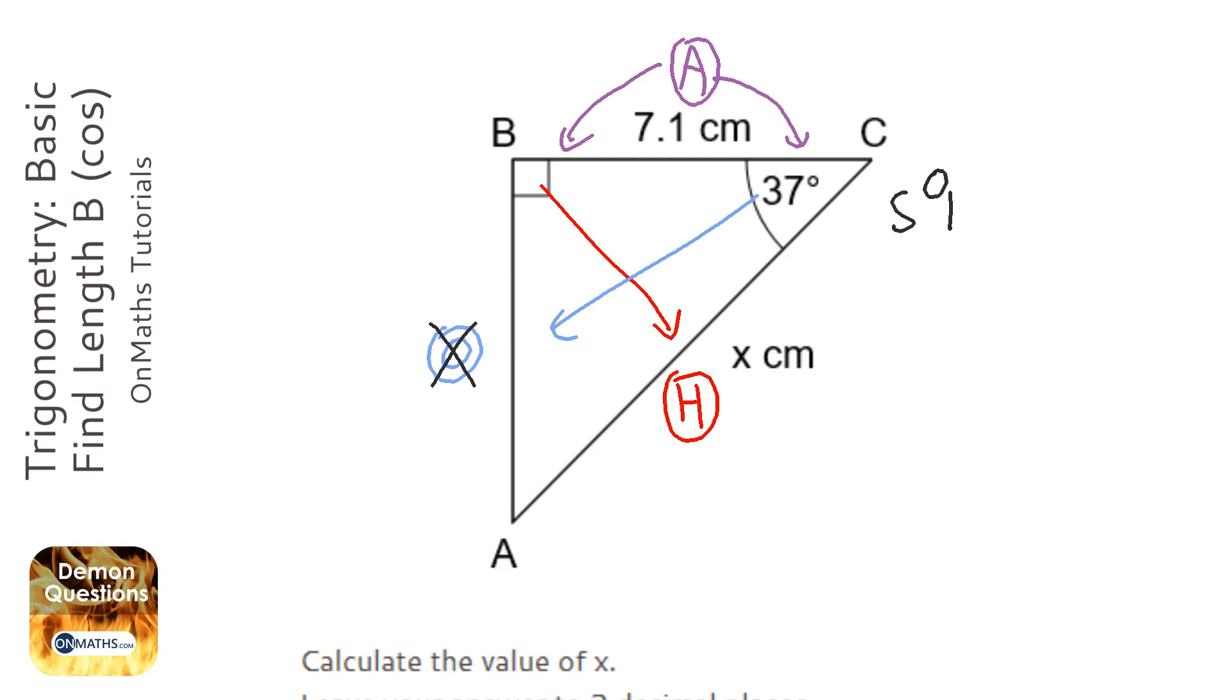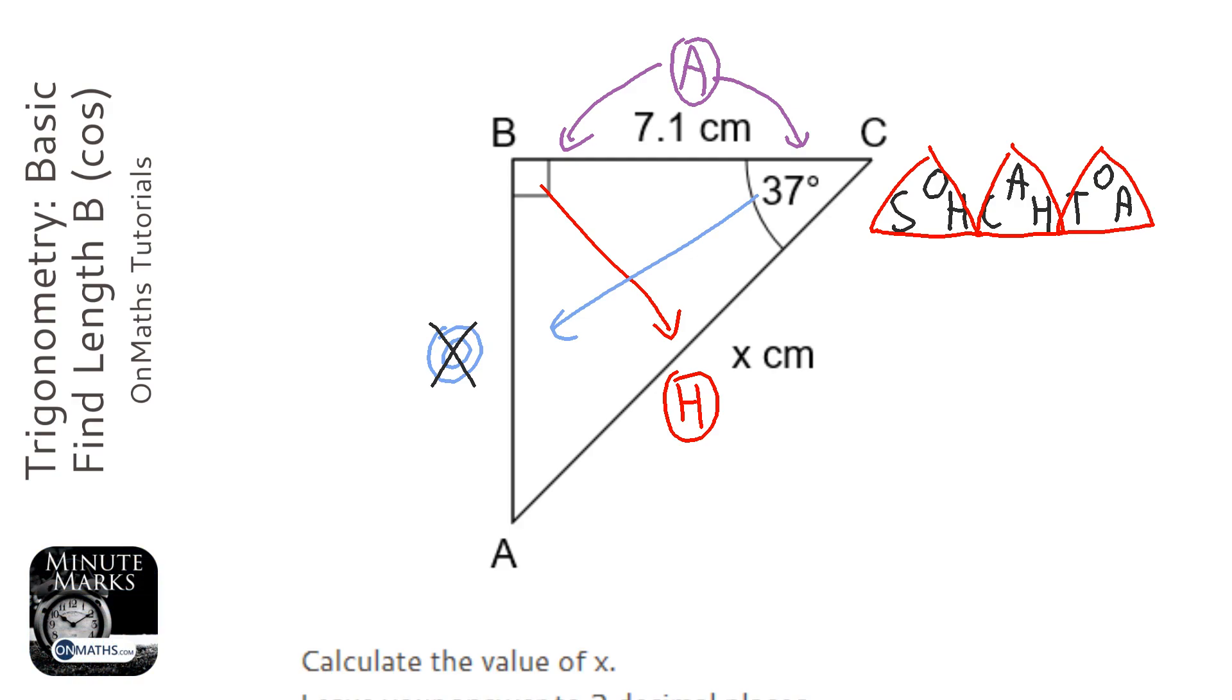Then we're going to write down SOH CAH TOA, and it's always the same whenever you use trigonometry, always write down the same thing. This is a collection of three triangles that basically tell you how to do this question. Next step is we're going to cross out the two that we don't need. We crossed out the opposite on our diagram, so we're going to cross out the two that have the opposite in, and it leaves us with CAH.